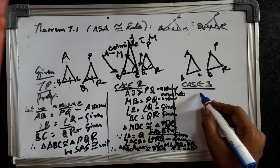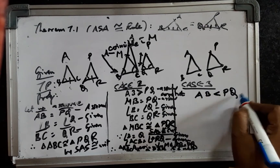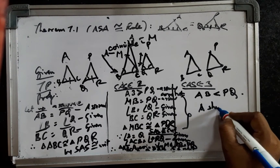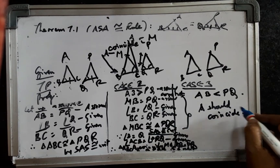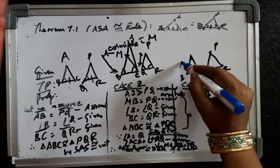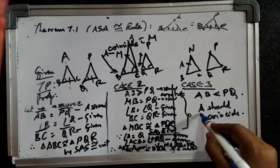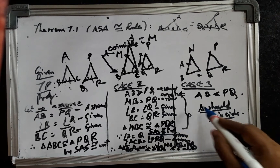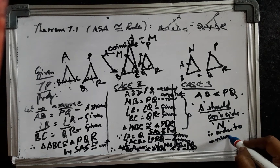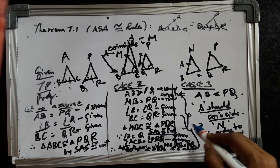For case 3, we take the converse argument that AB is less than PQ. By the same steps, A falls somewhere on the extended side and a point N is created. A should necessarily coincide with point N in order to arrive at the SAS congruence, as elaborated in case 2.